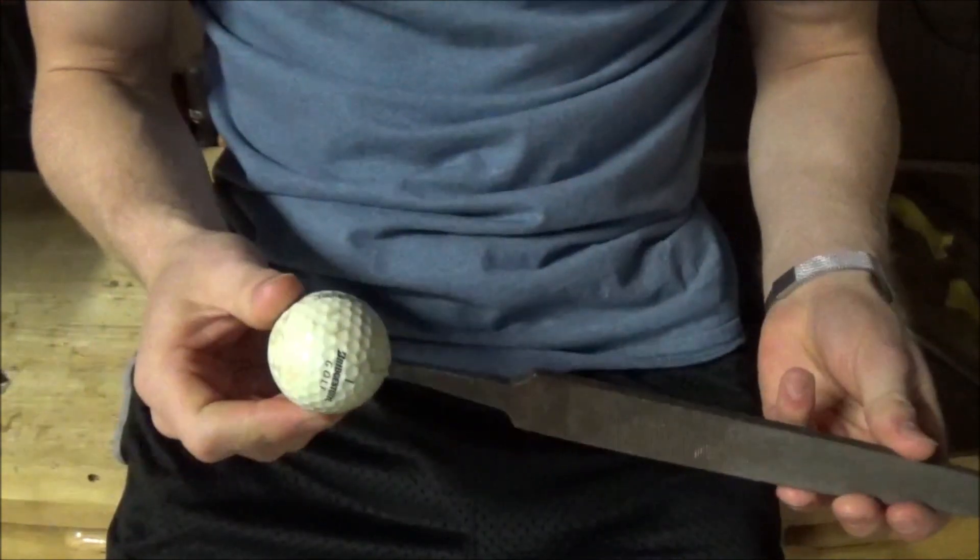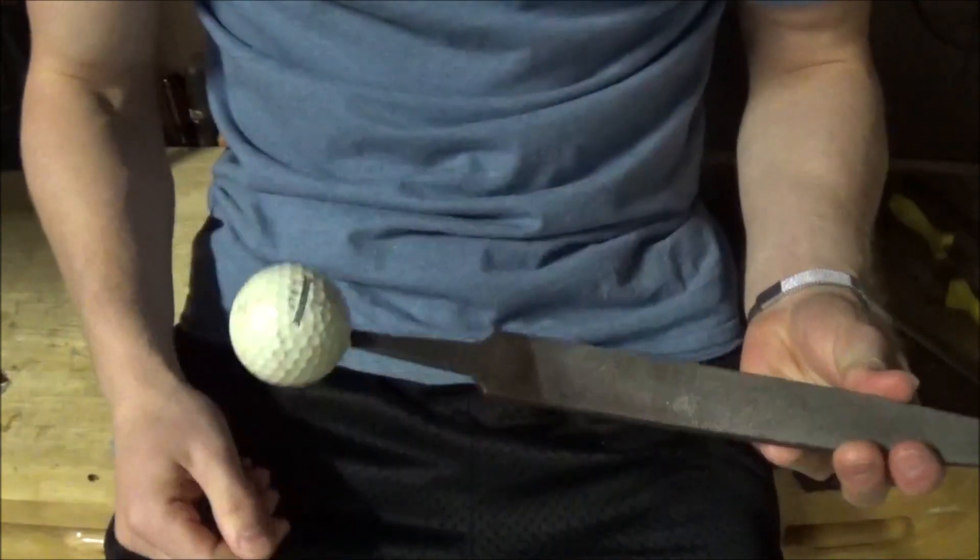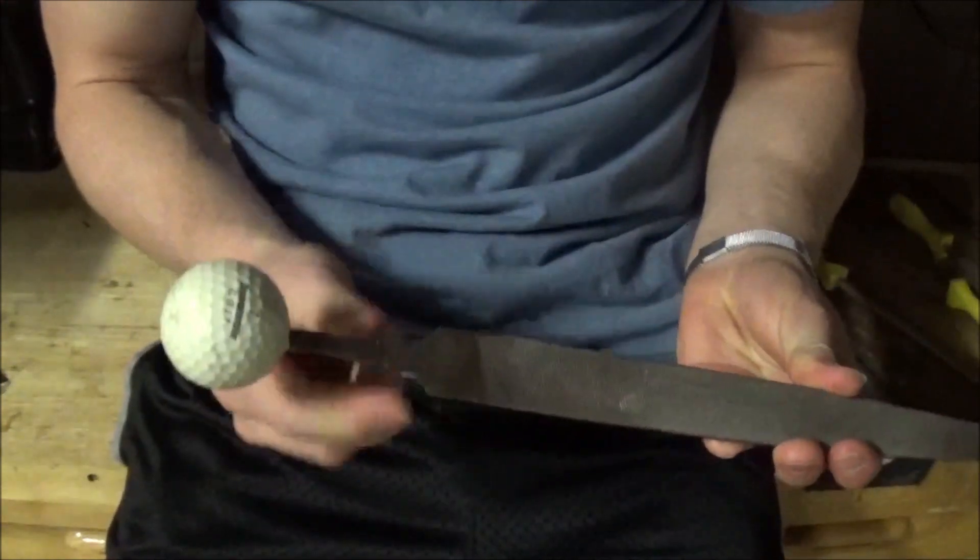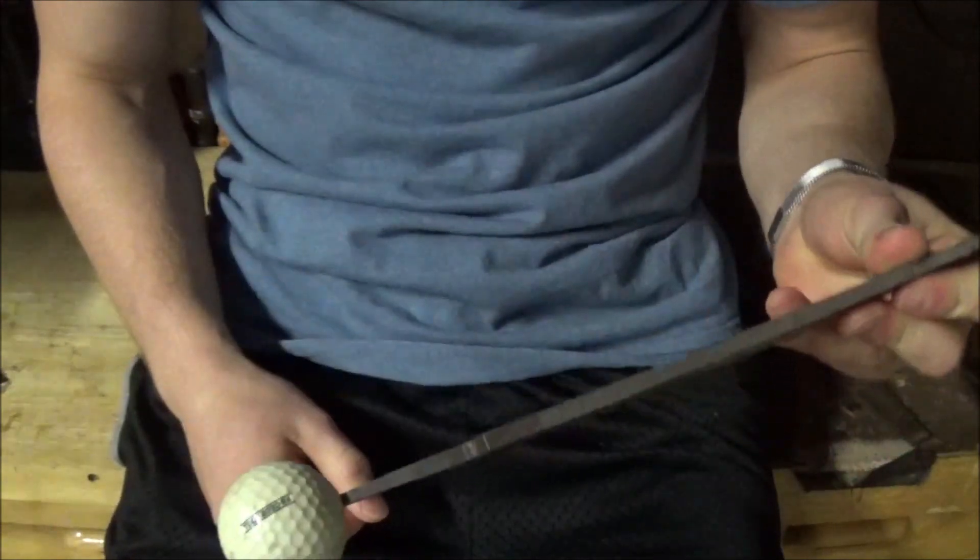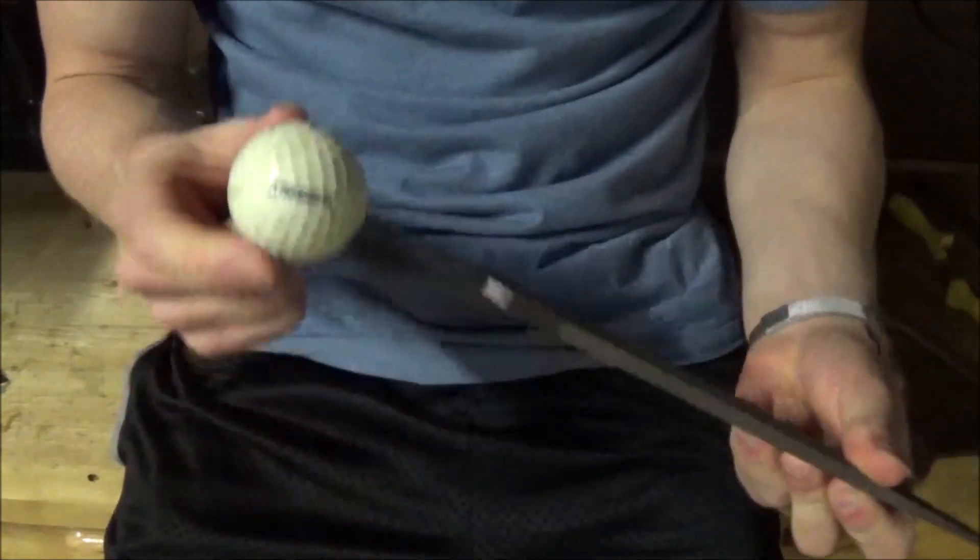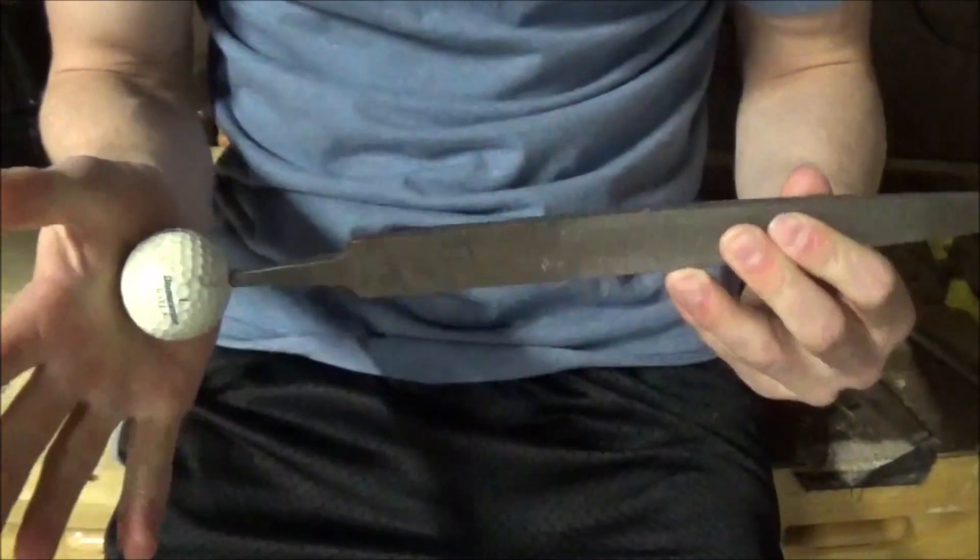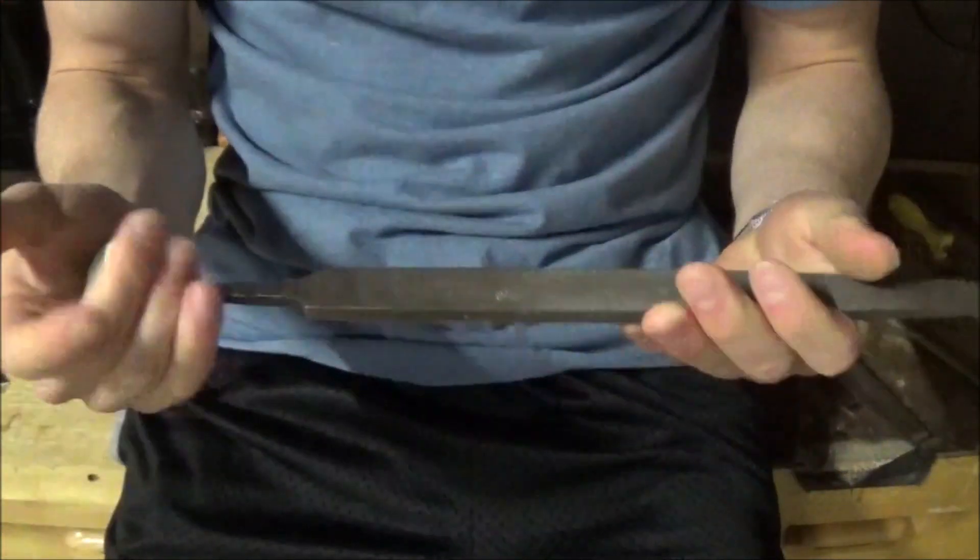A lot of files will also have handles. Older files don't come with handles, but it is really important to put a handle on a file because these tangs are pretty sharp. Putting on a handle is as simple as drilling a hole in a golf ball and pounding it onto the file. It's really not that hard to do.